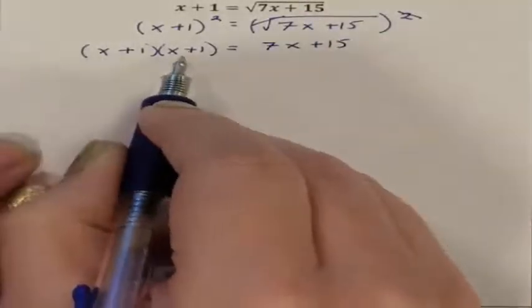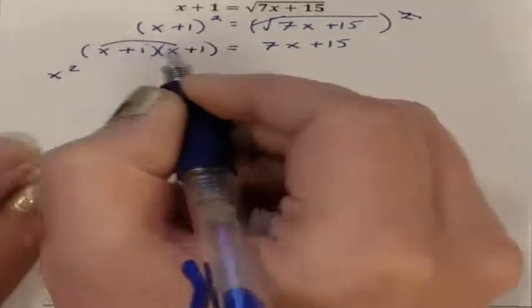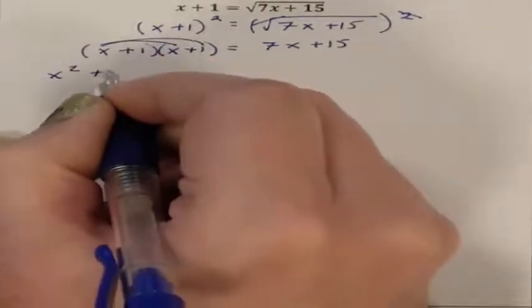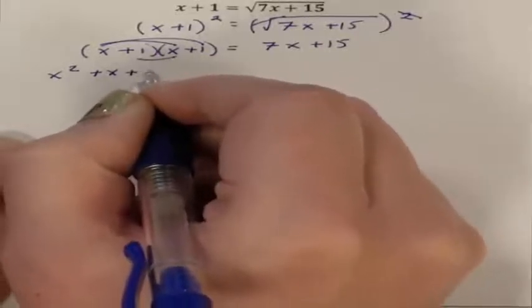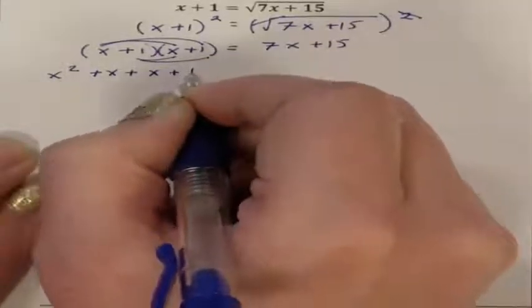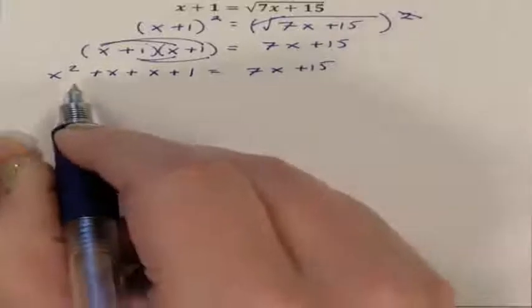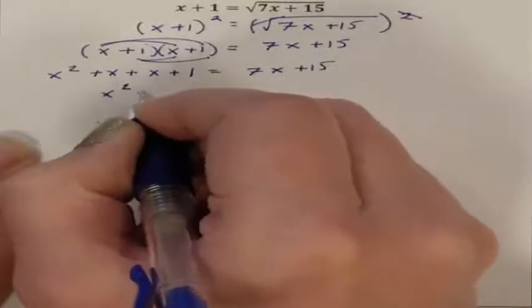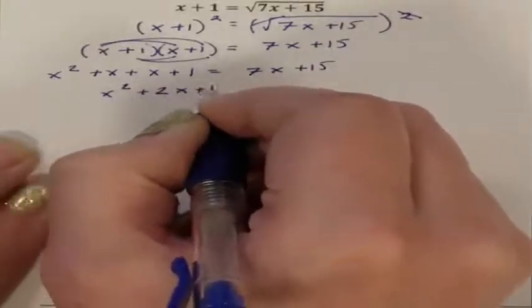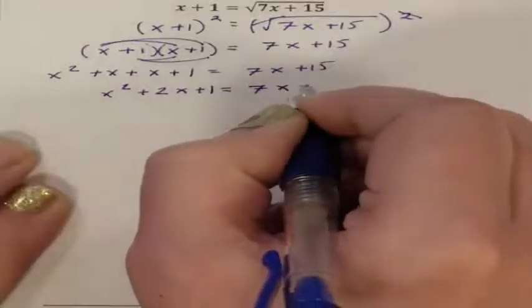Doing the distributive property, x times x is x squared, x times 1 is 1x, 1 times x is 1x, 1 times 1 is 1. So the left side, I have x squared plus 2x plus 1. This equals 7x plus 15.